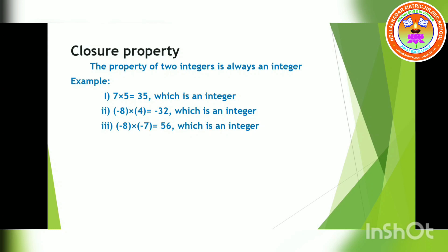Third example: taking two negative integers — minus 8 into minus 7. Eight sevens are 56. Both symbols are like (minus and minus), so according to rule number 1, we put the plus symbol, giving plus 56. From these examples, I proved that multiplication is closed — the product of two integers is always an integer.